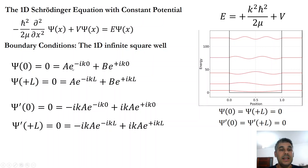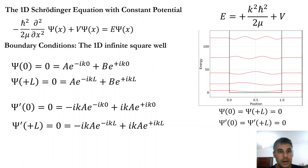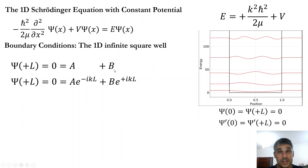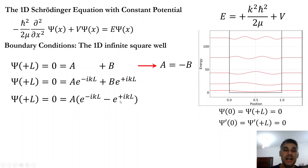Replacing x = 0, we get a times e to the power of minus i·k·0 plus b times e to the power of plus i·k·0. Since any exponential to the power of zero equals one, this gives a plus b equals zero. So the first boundary condition tells us a equals minus b. We can substitute b = minus a into the second boundary condition at x = L, factoring out a to get e to the power of minus ikL minus e to the power of plus ikL.